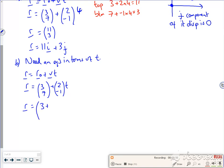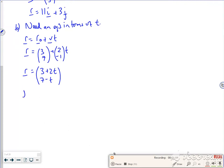So if I put them together as a single vector, it's 3 plus 2T across, 7 minus T up or down. Now I said that the J component is equal to zero, so 7 minus T is equal to zero, T is 7 seconds.